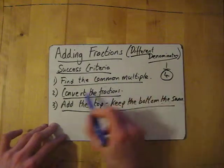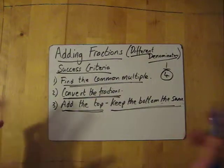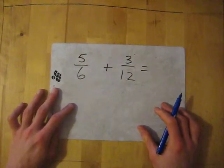Okay, so find the common multiple, convert the fractions, then add the top but keep the bottom the same. And that is it. Let's have a little go on a couple. So we've got 5/6 add 3/12.